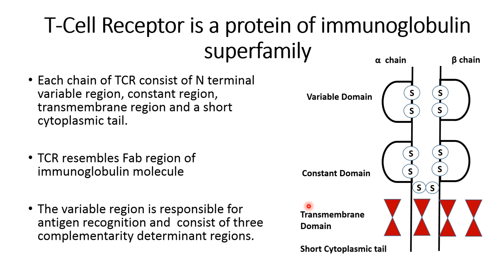The TCR closely resembles the FAB region of an immunoglobulin molecule. Similar to immunoglobulins, the variable region is responsible for antigen recognition, and it consists of three complementarity-determining regions. These three CDRs are responsible for recognition of antigens as well as MHC-presented peptides. Collectively, the T cell receptor recognizes the antigen presented via the MHC molecule.